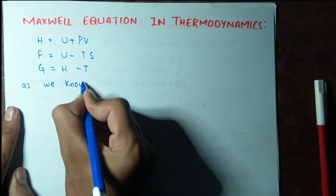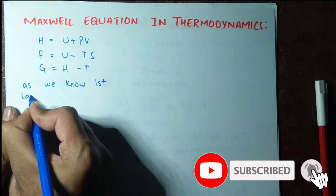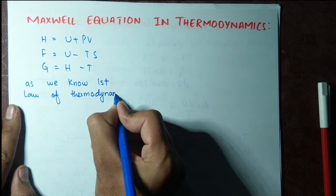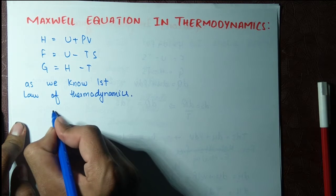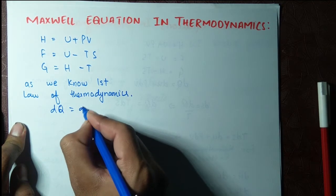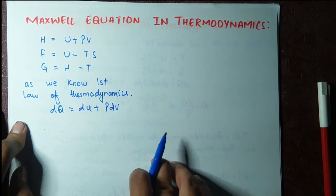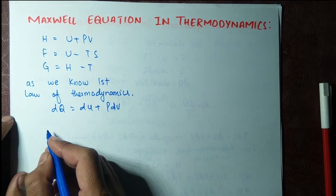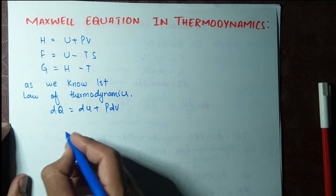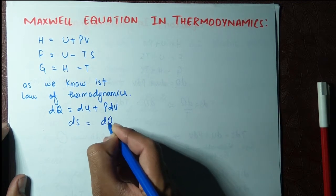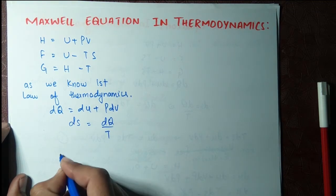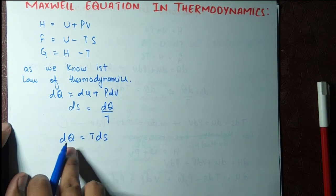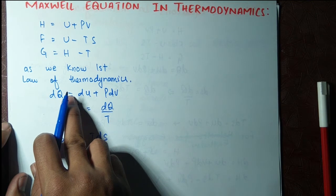Now, the first law of thermodynamics states that dQ equals dU plus P dV. For a reversible process, entropy is defined as dS equals dQ over T, which means dQ equals T dS.